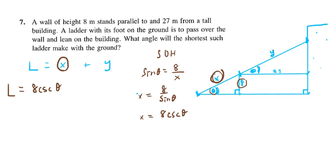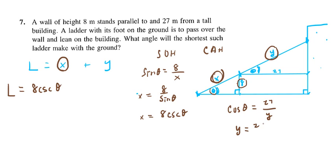Now we figure out y. We don't have an opposite side, but we do have an adjacent side of 27. So we use adjacent and hypotenuse — that's the cosine function, SOH-CAH-TOA. Cosine of theta equals adjacent side 27 over y. So y equals 27 over cosine theta, which is 27 secant theta. So we have a representation for y as 27 secant theta.